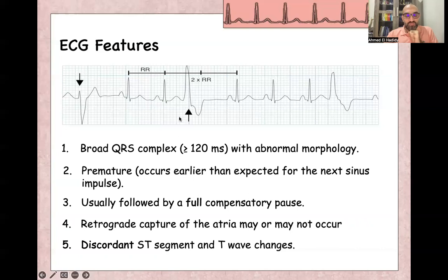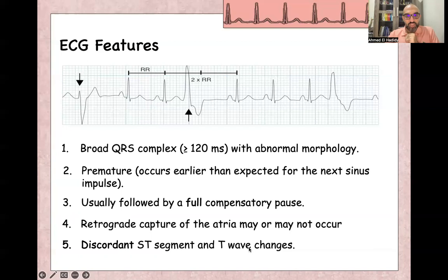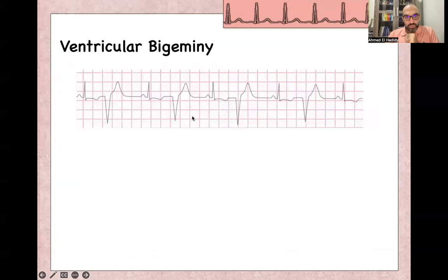Discordant ST-segment and T-wave changes mean that if the QRS is positive, there will be slight ST depression with inverted T-waves.